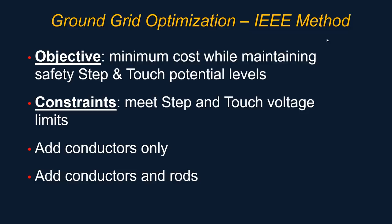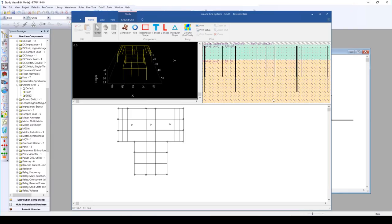Let's briefly go over the ground grid optimization. The objective is to minimize cost while maintaining safety on the step and touch potential levels. The constraints are to meet the step and touch voltage limits. You have the ability to optimize based on adding conductors only, or you can optimize based on adding conductors and rods.